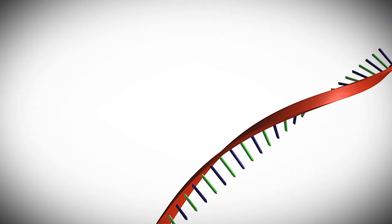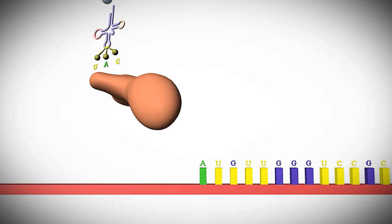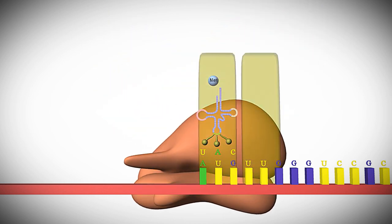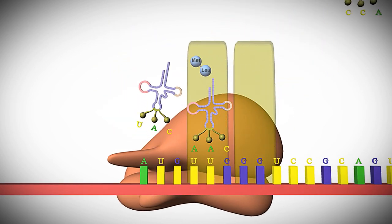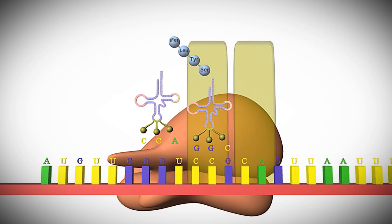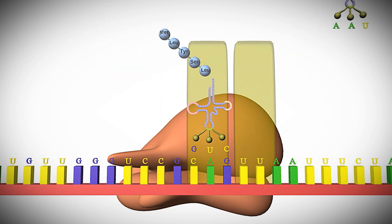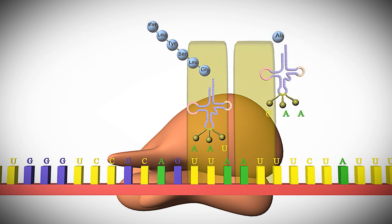Coordinated machines within the cell access vital information in the cell's DNA. Certain protein machines transfer that information at just the right times and amounts to RNA molecules. And others use some of that information as blueprints to build more proteins.